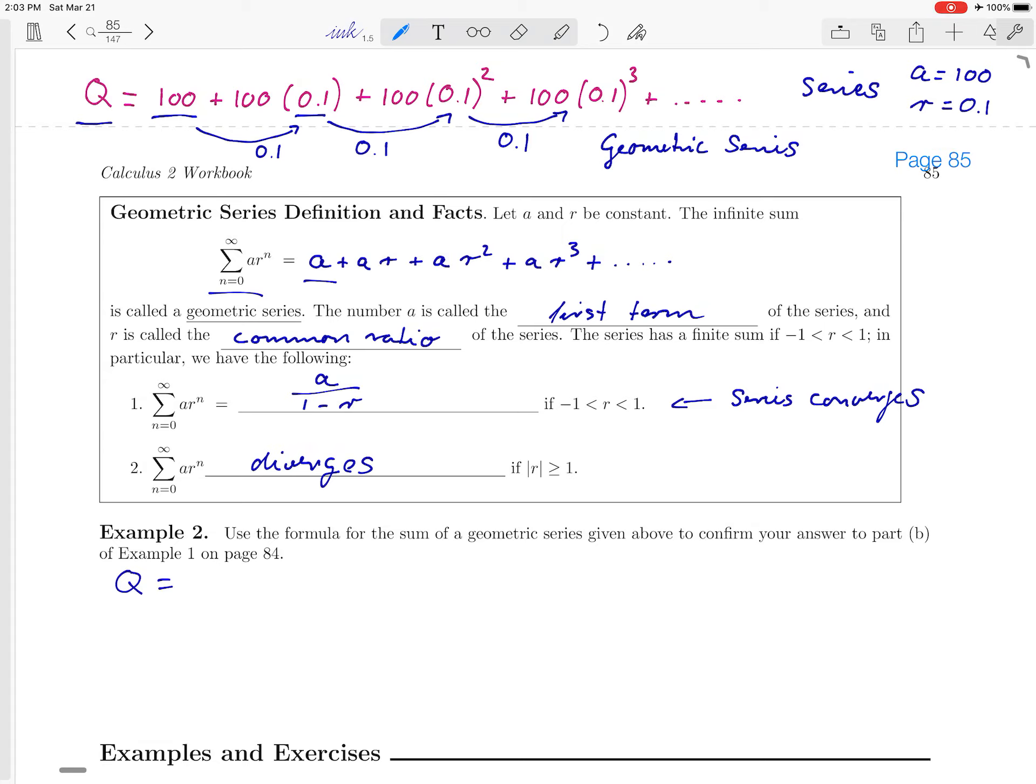And now we are supposed to confirm this. So again, q from example one was equal to 100 plus 100 times 0.1 plus 100 times 0.1 squared plus 100 times 0.1 cubed, and so on. And so this is a geometric series with a equal to 100 and r equal to 0.1. And so formula number one tells us that q is equal to, I'm just going to write down the formula, a over 1 minus r. That's our formula.